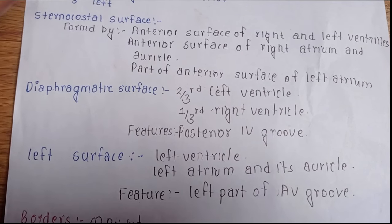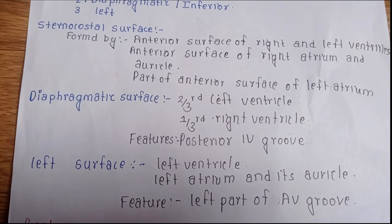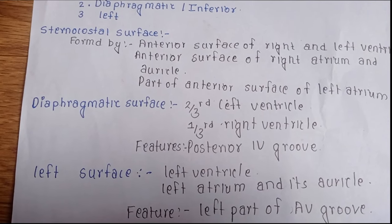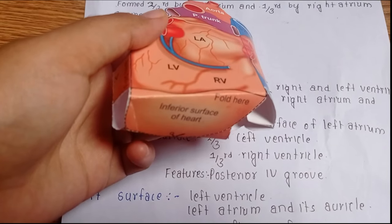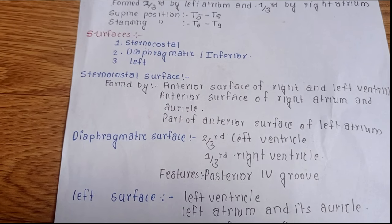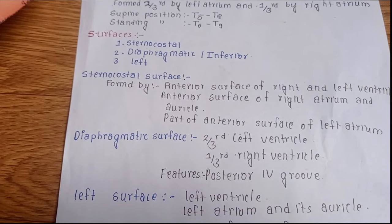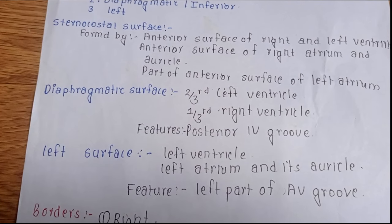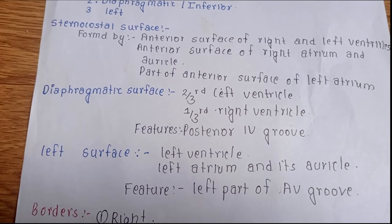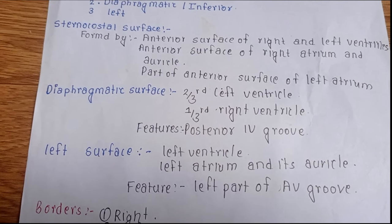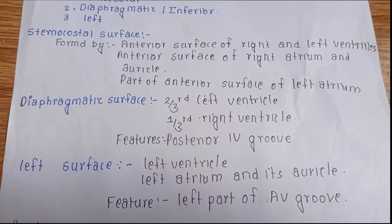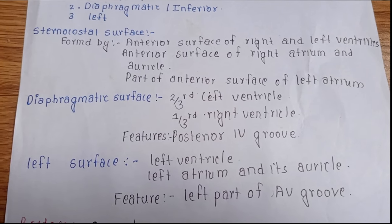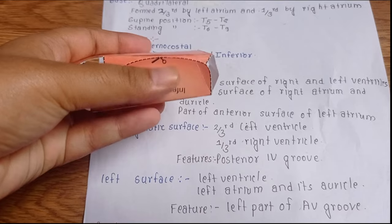Now let's talk about the diaphragmatic surface. It is formed two-thirds by the left ventricle and one-third by the right ventricle, and the posterior interventricular groove lodges in the diaphragmatic surface. Here we can see the diaphragmatic surface. Similarly, the left surface is formed by the left ventricle and left atrium and its auricle.